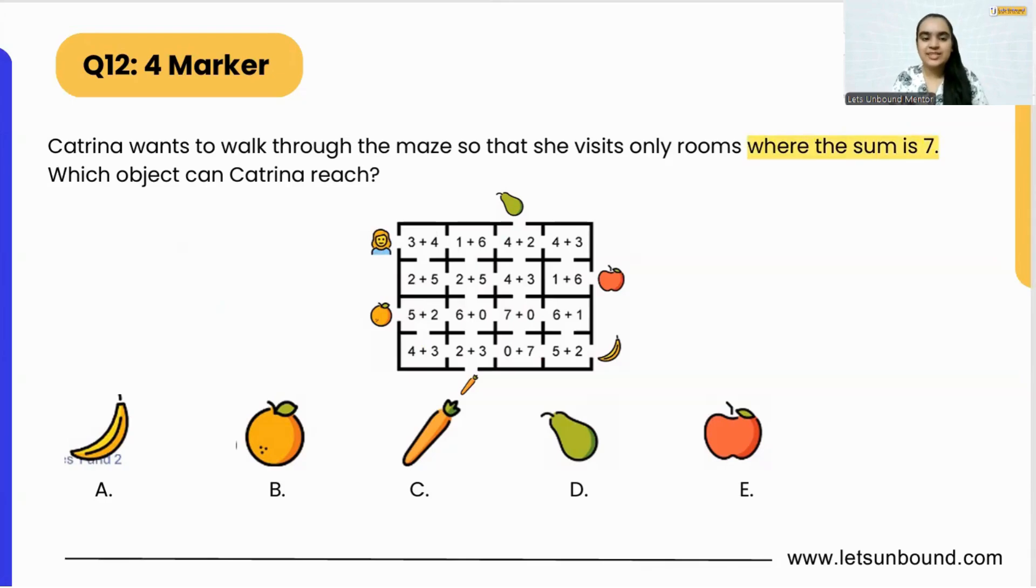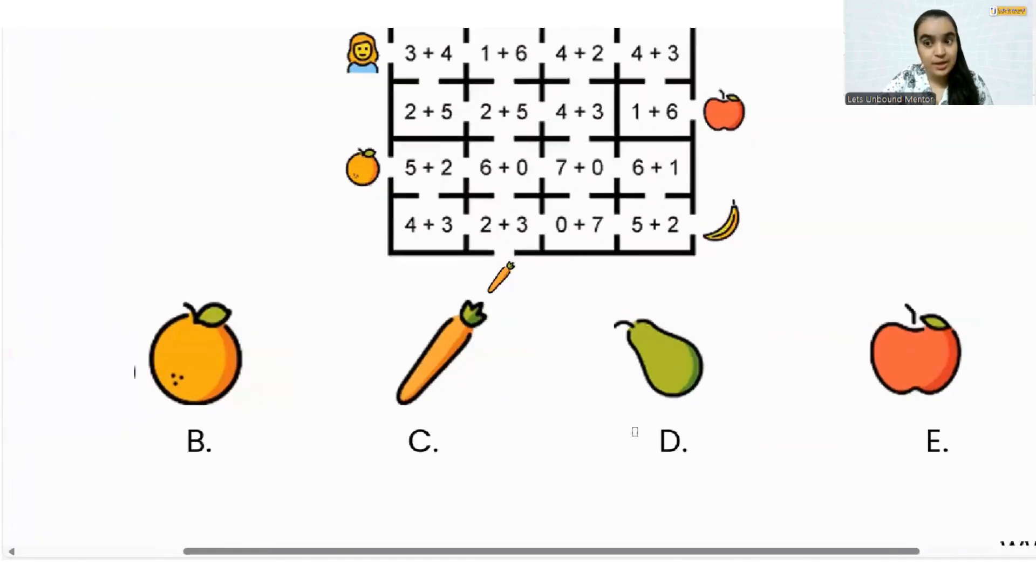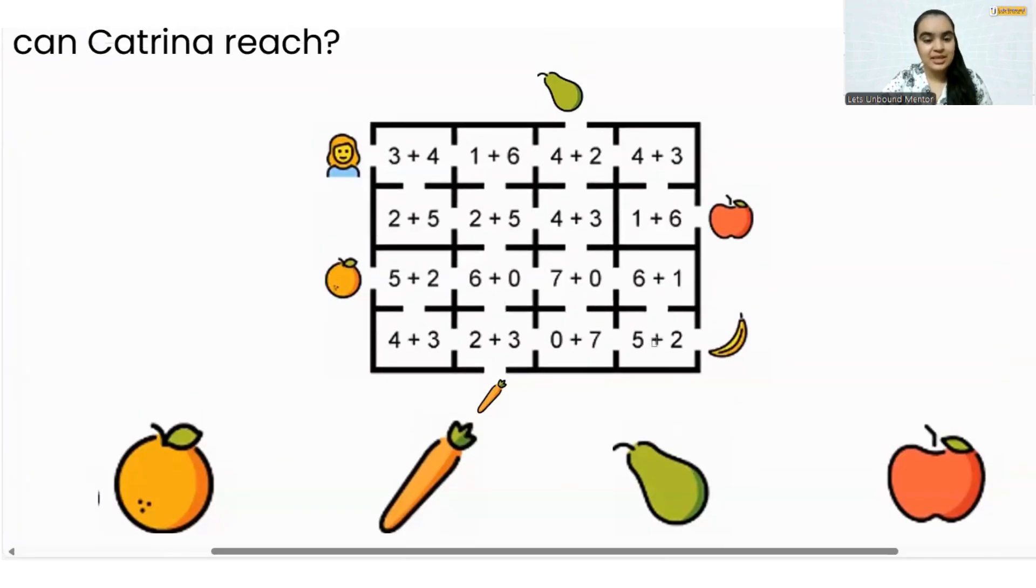There are so many rooms, right? But she will visit only the rooms where the sum is seven. Pretty interesting and pretty easy. Let's see. But there can be multiple rooms that have seven as the answer. Let's see what will be our correct answer.